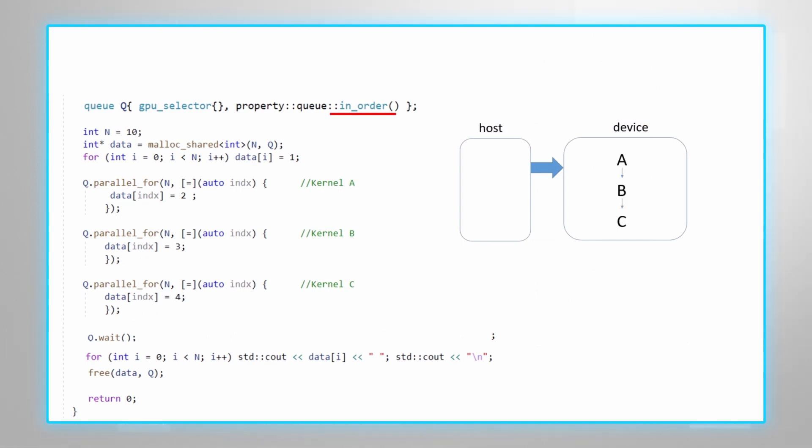So the device will make sure that the kernels are performed internally on the device in order. Getting the data back to the host requires another synchronization on the host to make sure we don't print or free the data before all the kernels completed.